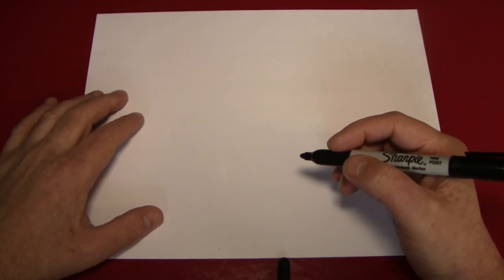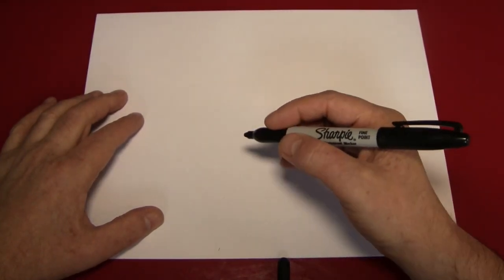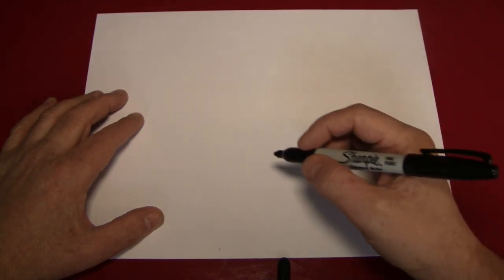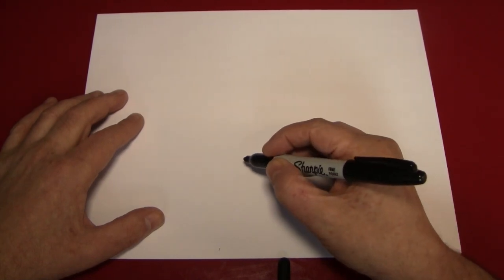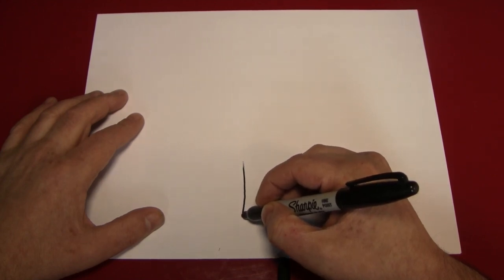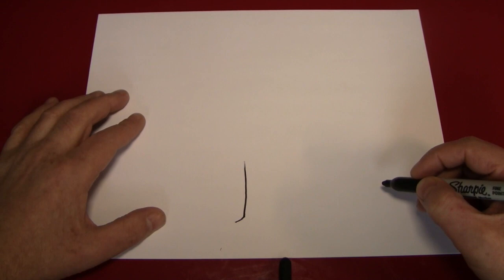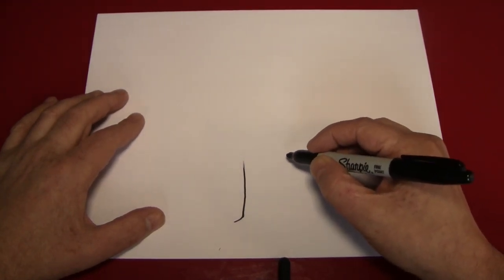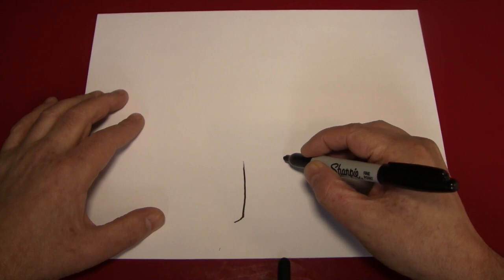Well, let's start with the trunk, and the trunk shouldn't go up too far on your page because you're going to want to leave room for the leaf and branch area of the tree. So you're going to start by making one line, and it doesn't have to be a straight line, but at the very end, it should curve to the left. Now do the same thing on the other side, but at the bottom, curve to the right.